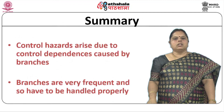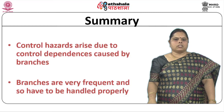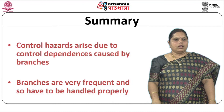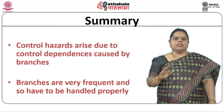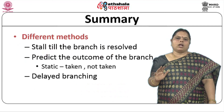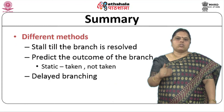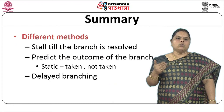To summarize, control hazards arise due to control dependencies caused by branches. They cannot be ignored because branches are very frequent and must be handled appropriately. Different methods are available: stalling the pipeline until the branch is resolved, static prediction using either a taken or not-taken approach, and delayed branching. This module focused on static prediction methods. Thank you.